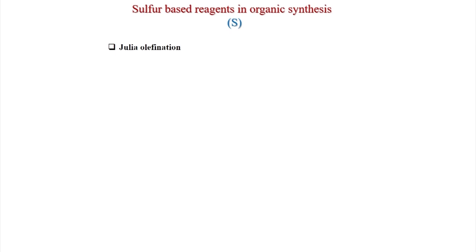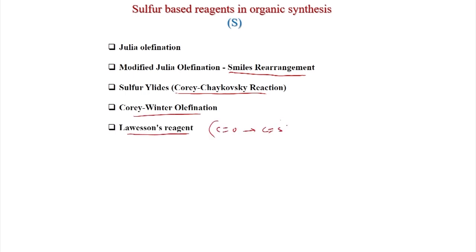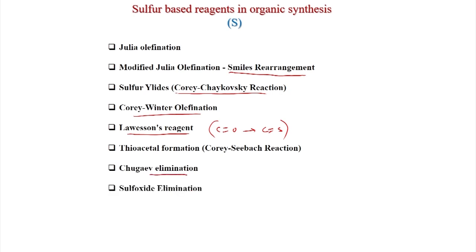Welcome again. Today we will discuss sulfur-based reagents in organic synthesis. We will cover Julia olefination, modified Julia olefination (Smiles rearrangement), sulfur ylides, Corey-Chaykovsky reaction, Corey-Winter olefination, Lawesson's reagent, C=O to C=S conversion, thioacetal formation, Chugaev elimination, olefin formation via sulfoxide elimination, and reactions of the dimsyl anion — which bears a negative charge on the alpha carbon of the S=O bond.